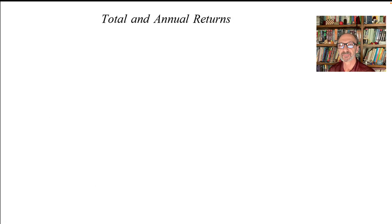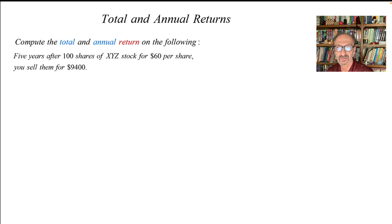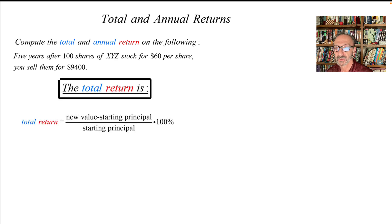Let's get started. Total and annual return. Compute the total and annual return on the following: five years, 100 shares for $60, and we're gonna sell it for $9,400 after five years. The total return is new value minus starting principal over starting principal.